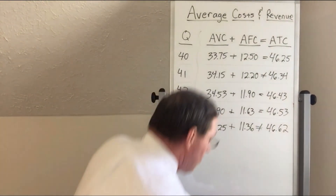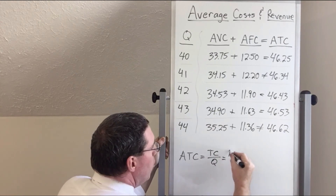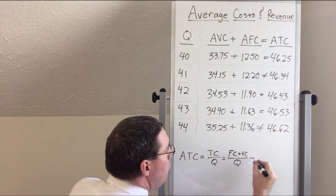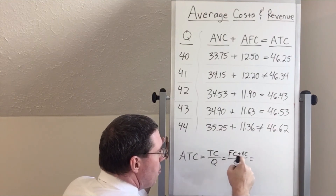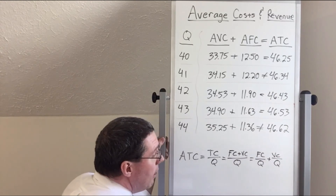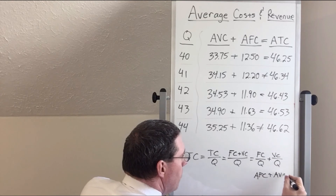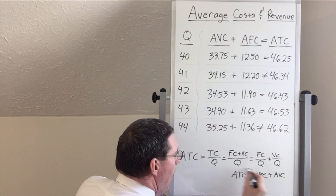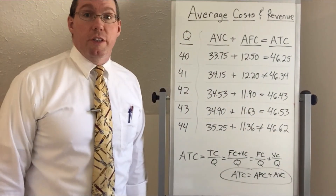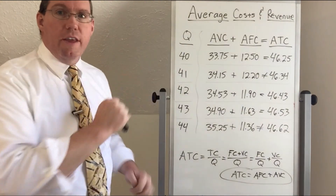Here's a quick mathematical proof: ATC equals total cost divided by quantity. Since total cost equals fixed cost plus variable cost, we have (FC + VC) divided by quantity. We can split this into two fractions: fixed cost over quantity plus variable cost over quantity. Fixed cost over quantity is AFC, and variable cost over quantity is AVC. Therefore ATC equals AFC plus AVC — or AVC plus AFC, since addition is commutative. That's all we have for average costs and revenues. We only have one lesson left, where we bring all 12 variables together.